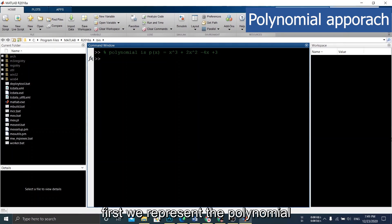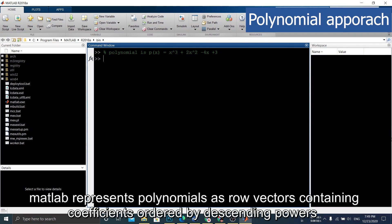First, we represent the polynomial. MATLAB represents polynomials as row vectors, containing coefficients, ordered by descending powers.